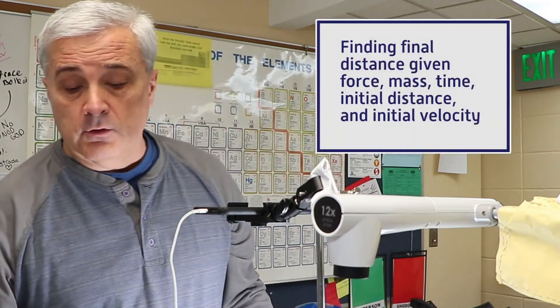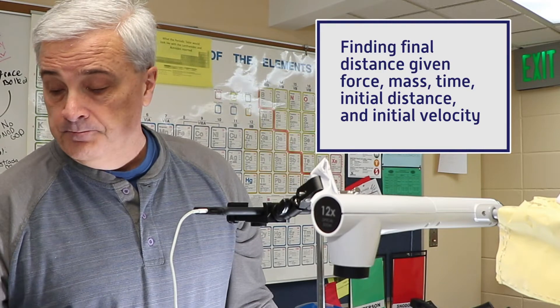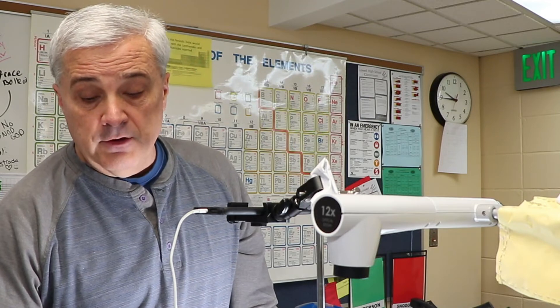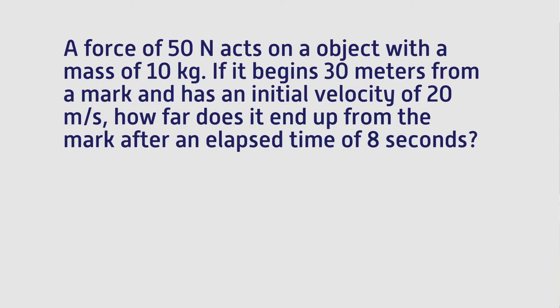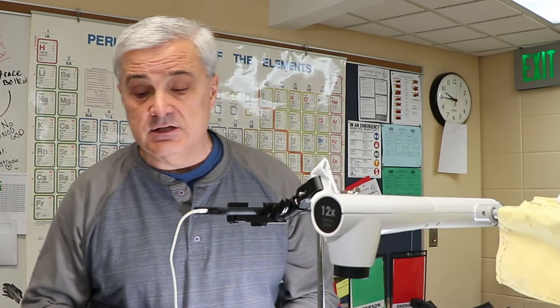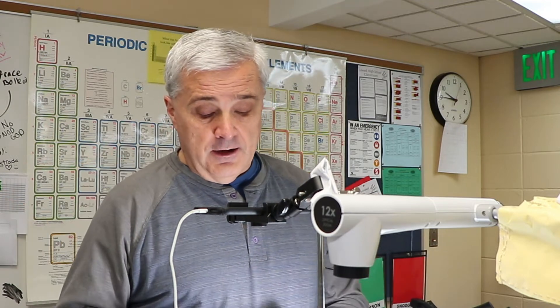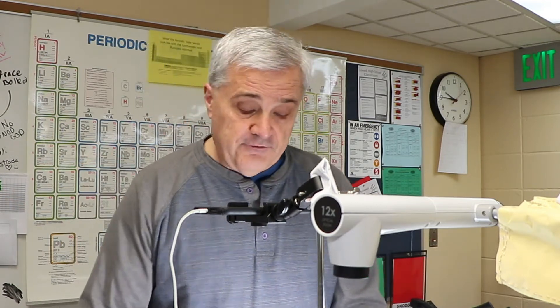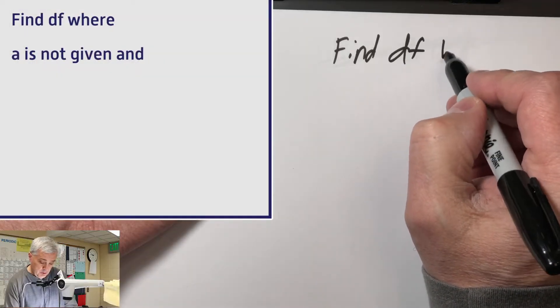In this episode, we are going to be trying to find the final distance if we are given other variables not including acceleration. So we're finding d sub f in a situation such as a force of 50 newtons acts on an object with a mass of 10 kilograms. If it begins 30 meters from a mark and has an initial velocity of 20 meters per second, how far does it end up from the mark after an elapsed time of 8 seconds? So ultimately the question is how far, and the how far question is answered by d sub f.